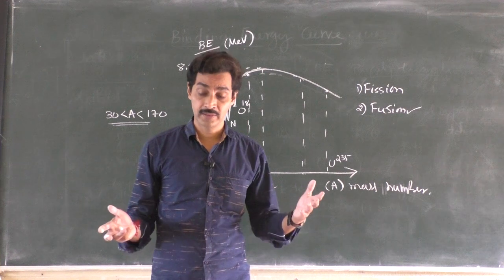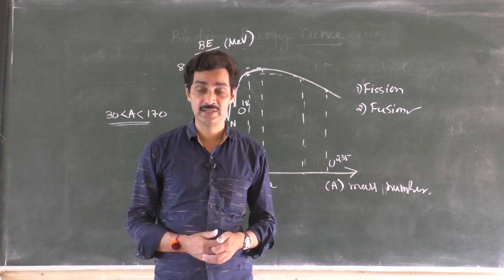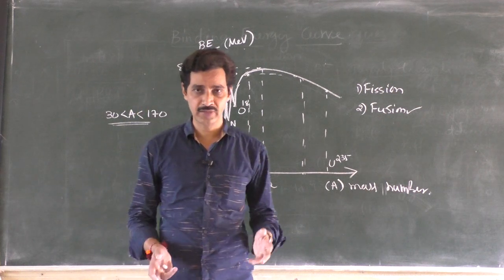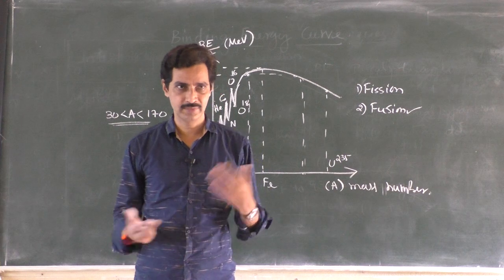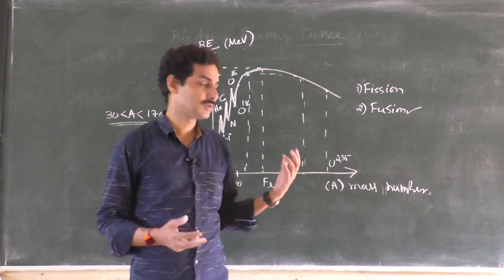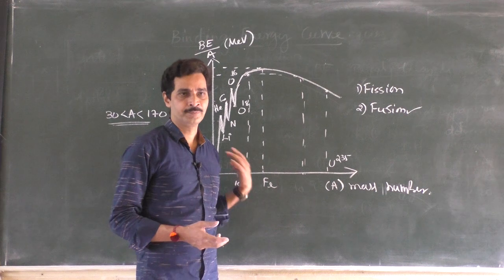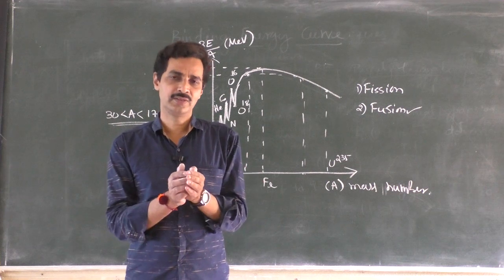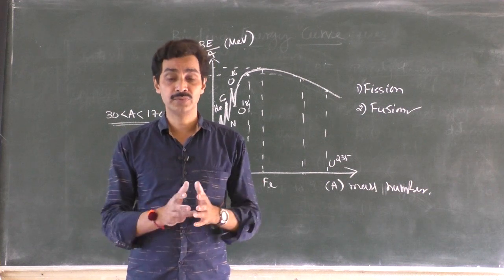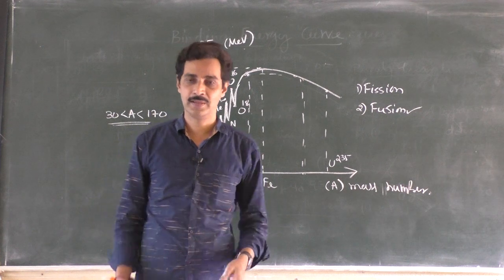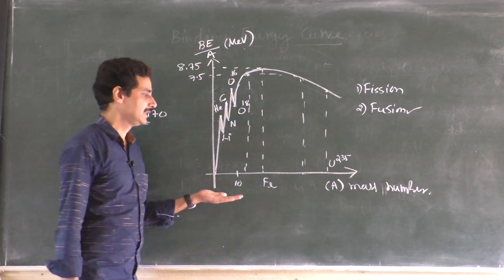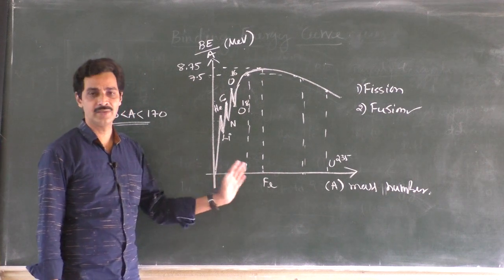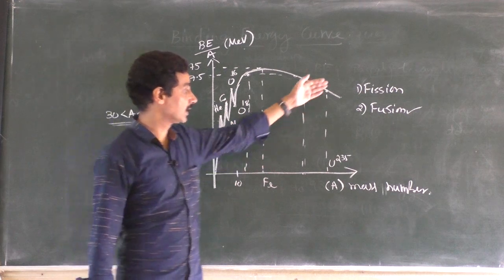We have a model called the liquid drop model, which explains all these things. But the liquid drop model was not successful in explaining all nuclear phenomena. However, why fission and fusion occur is explained by the liquid drop model. Small liquid drops are unstable — they combine together to form a bigger drop. If the drop is too big, it splits into smaller drops to become stable. So everything is explained in the graph itself — the graph is self-explanatory and you can answer all questions on fission and fusion.